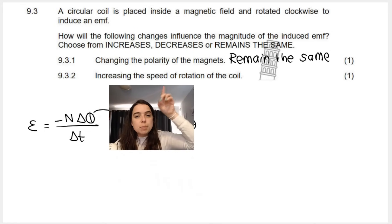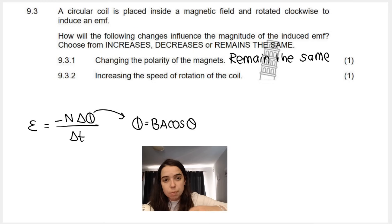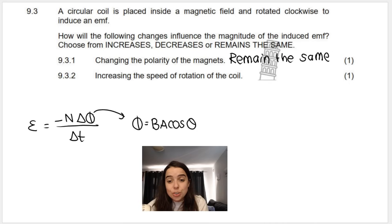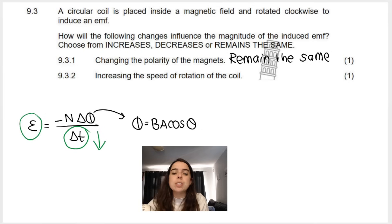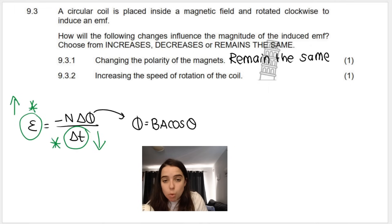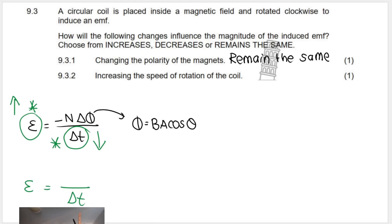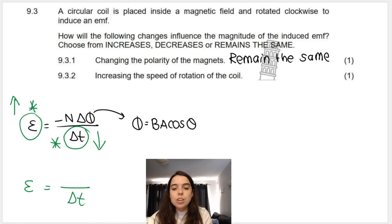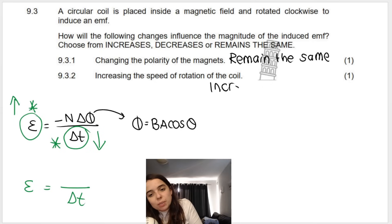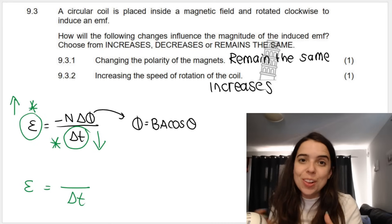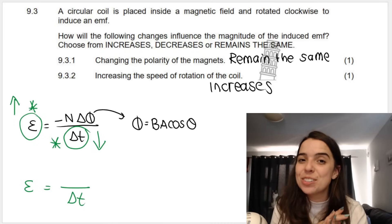Second change: if you increase the speed of rotation of the coil, the time it takes to complete a rotation decreases. Since time is in the denominator of the EMF formula, and time decreases, EMF increases — they are inversely proportional. So the answer is: the induced EMF increases. I hope this has been helpful — make sure you subscribe for more maths, physics, and chemistry. Bye everybody!